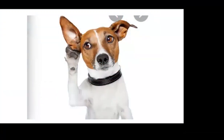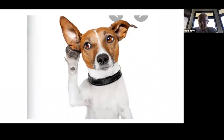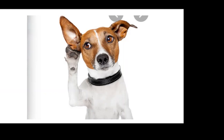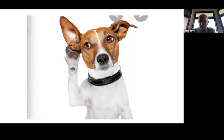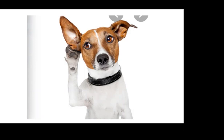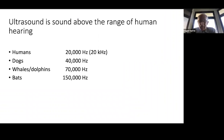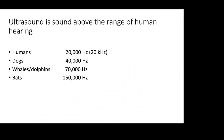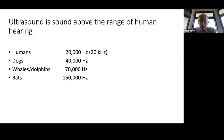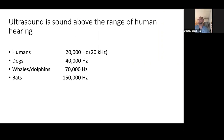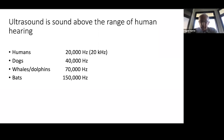The definition of ultrasound is sound with a frequency higher than the audible range for humans — above 20 kilohertz. Technically, ultrasound is sound above the range of human hearing. Humans can hear up to 20,000 hertz or 20 kilohertz.